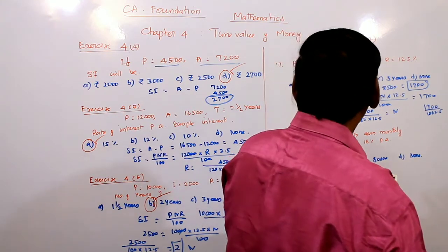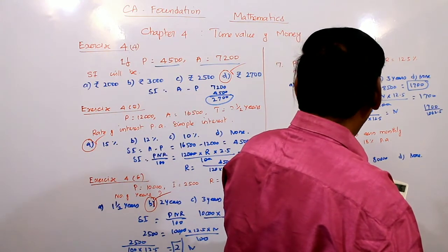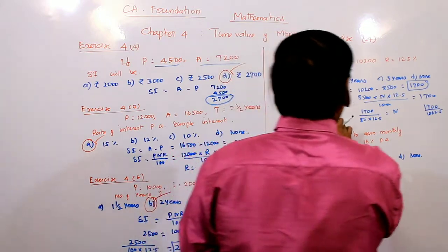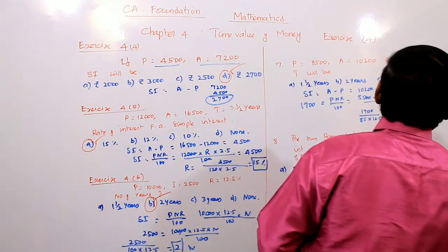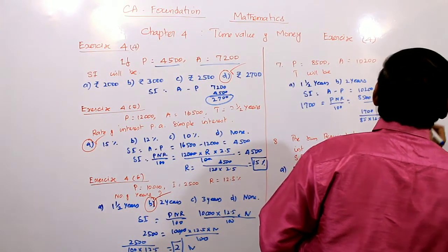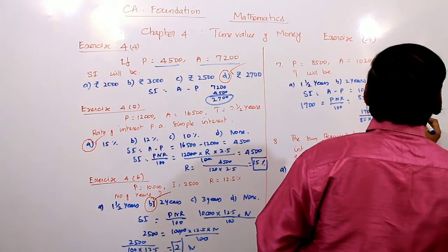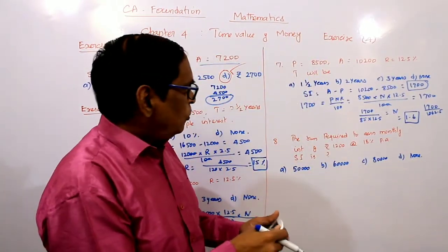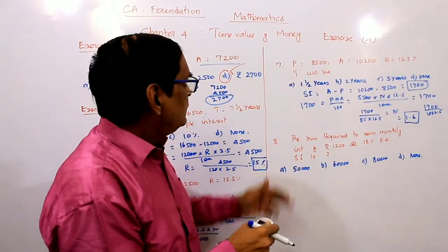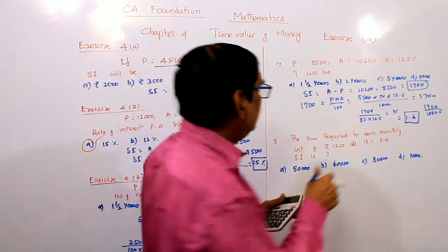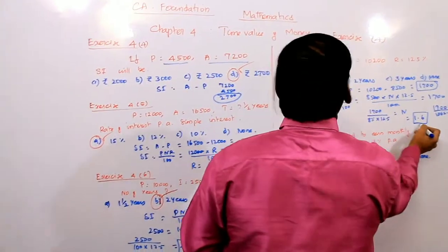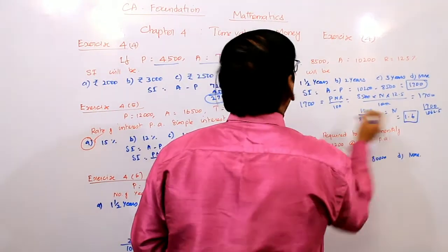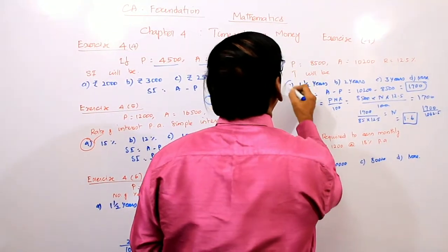N = 1.6. So the number of years is 1.6. The answer is this — 1.6 years.